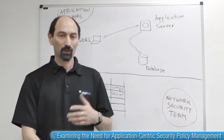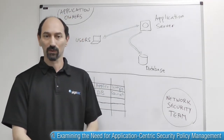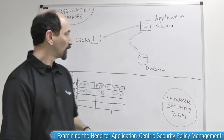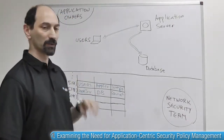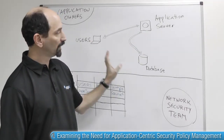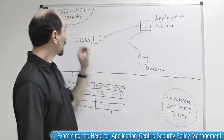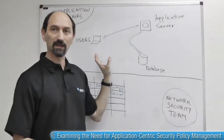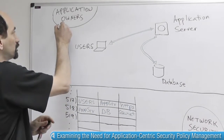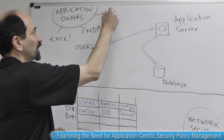So what am I talking about? Well, organizations often have hundreds, sometimes thousands of different business applications to serve their needs. Let's look at a very simple example of what such an application might look like. Imagine you have an application that serves a particular group of users, and those users need to communicate with an application server, and the application server has to communicate to a database system behind the scenes. The application owners know this — they have a record of these communication patterns, and they keep track of it using maybe an Excel spreadsheet, maybe a CMDB system, or maybe it's just in their heads.